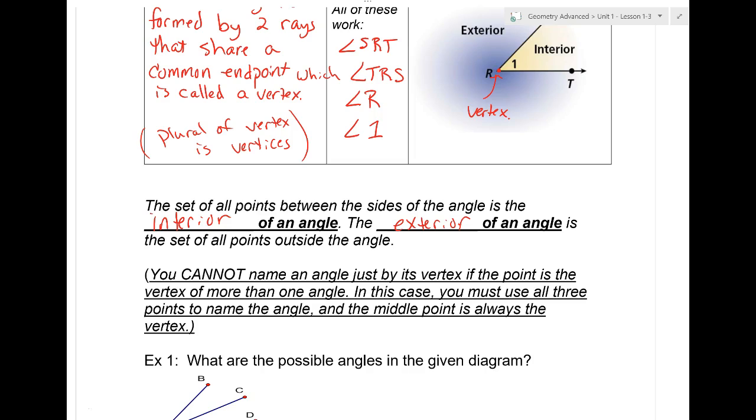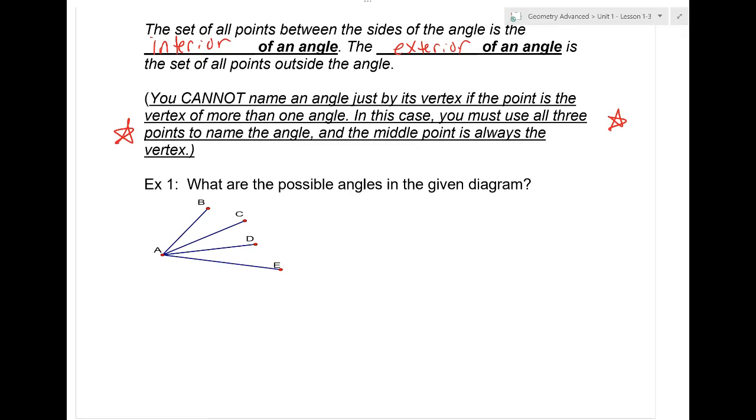If I give you something in bold face and underlined, do you think it's slightly something you should know? Let's read it together then. You cannot name an angle just by its vertex if the point is in the vertex of more than one angle. In this case, you must use all three points to name the angle, and the middle point is always the vertex.